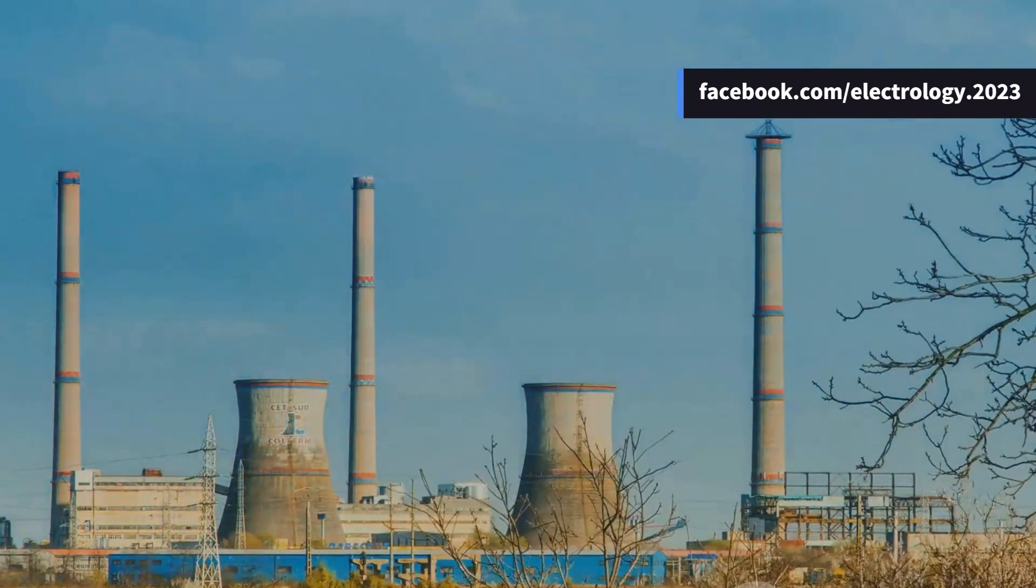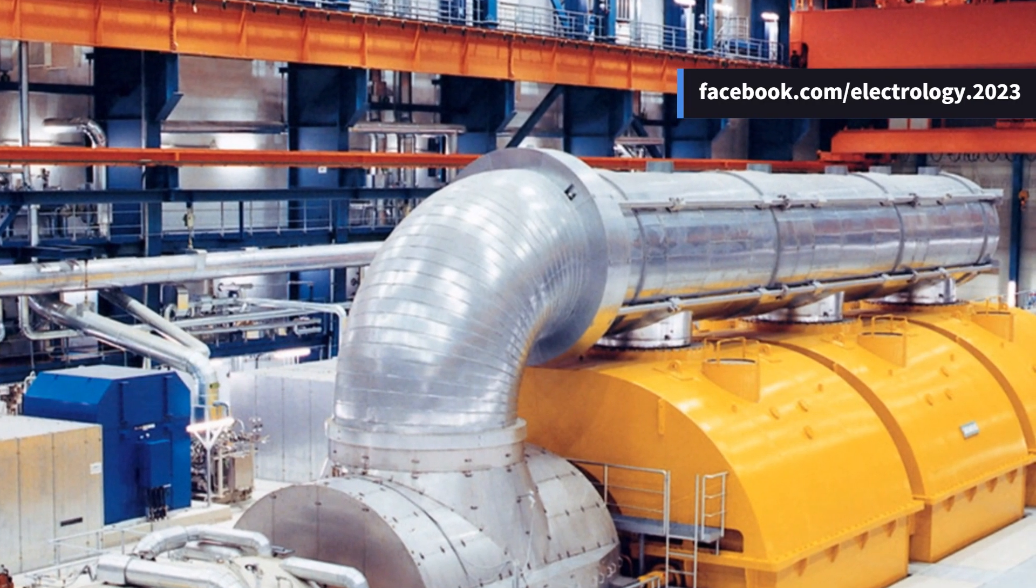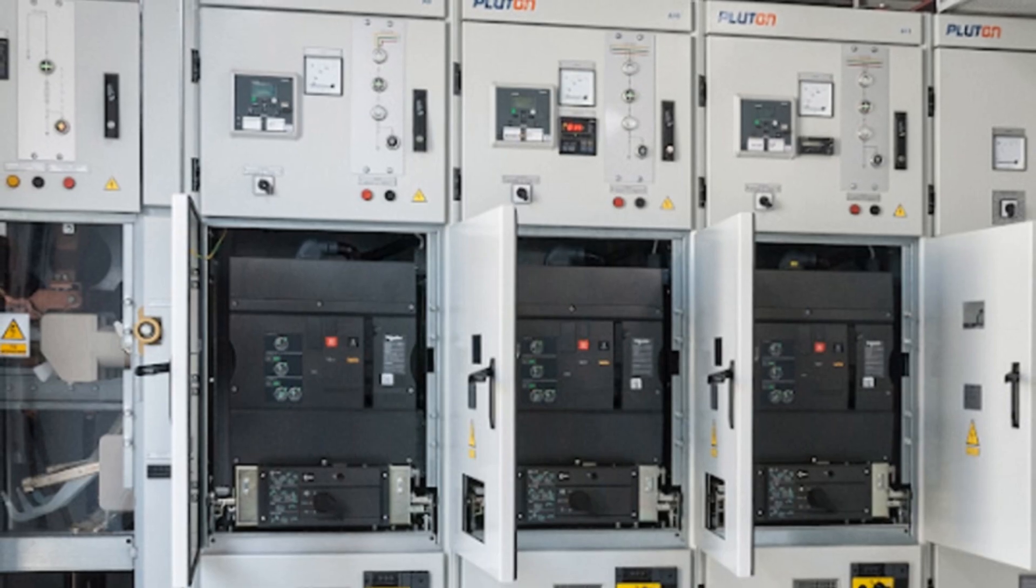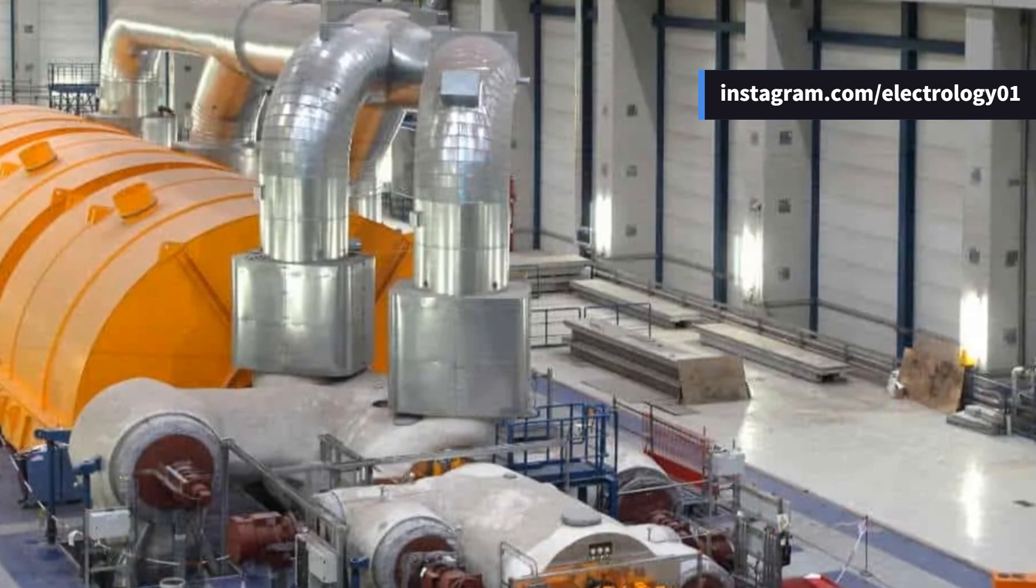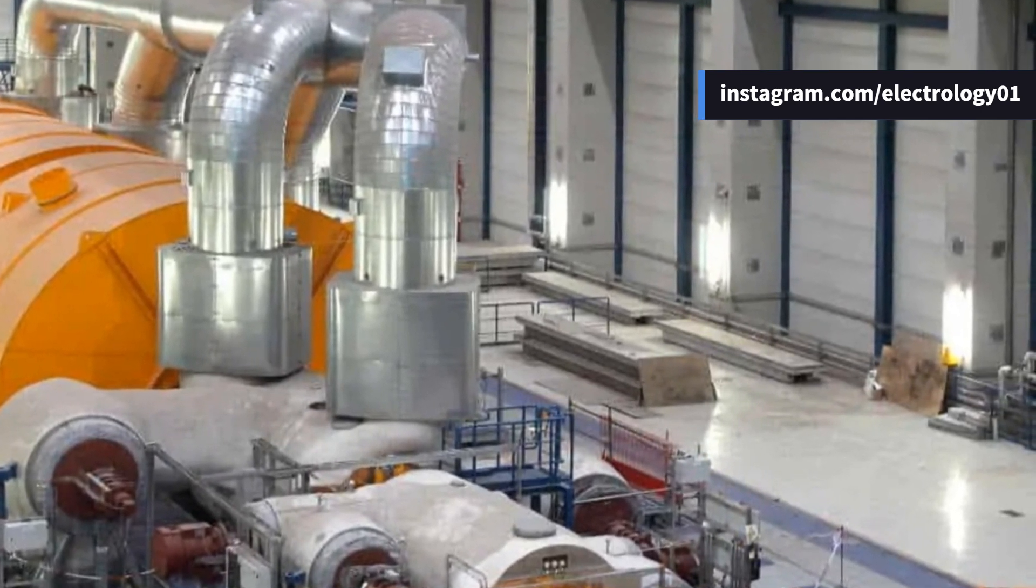Ever wondered what really protects a massive alternator deep inside a power plant when something goes wrong inside its windings? Not fuses. Not circuit breakers alone. There's a powerful intelligent system guarding it. And today you're going to understand it like never before.